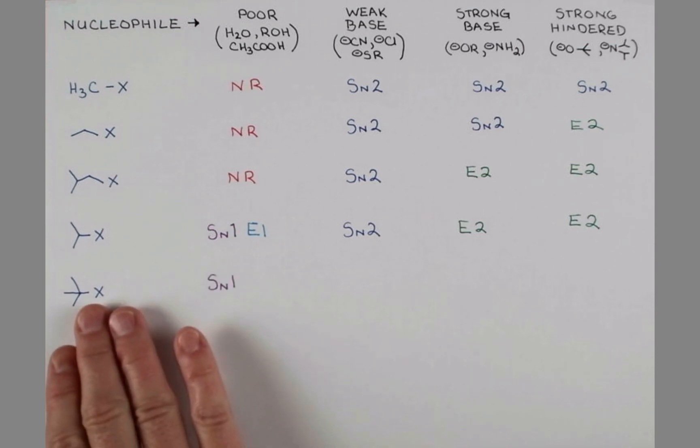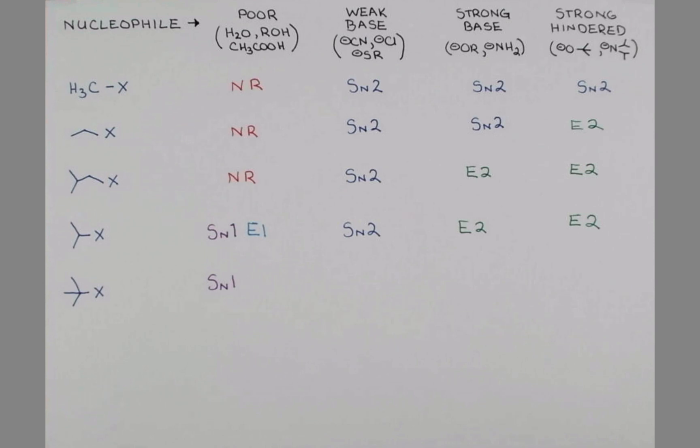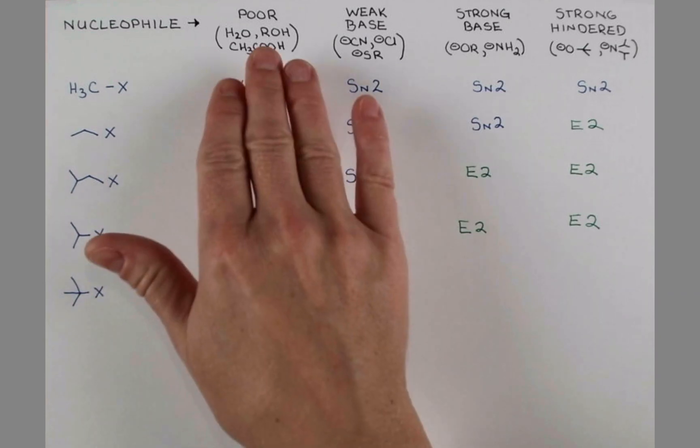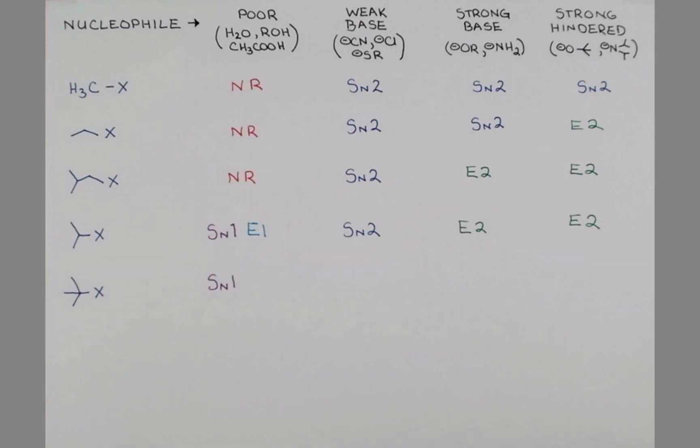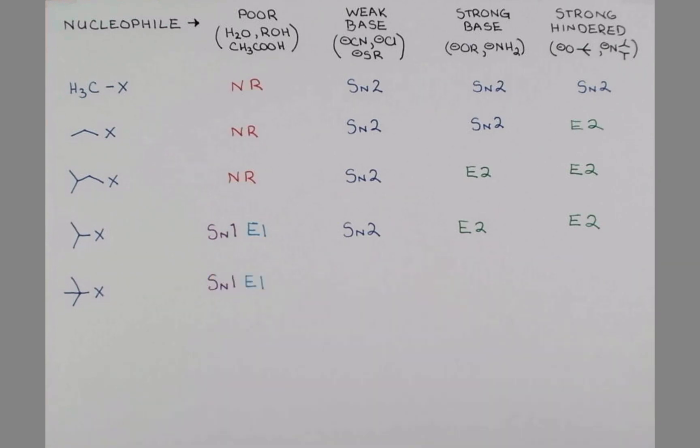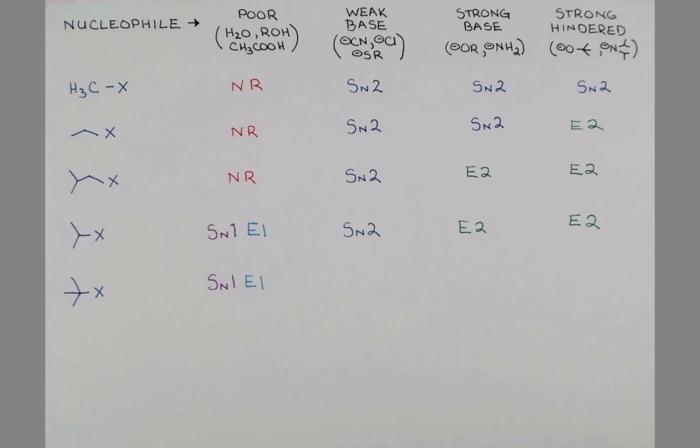Again, once we form the carbocation here, it's pretty easy to get elimination, and so there's a competing mechanism under these conditions, which is again E1. Weak bases will also promote a mixture of SN1 and E1 products.